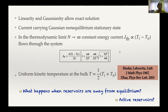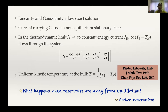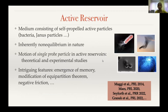What they showed is that in the thermodynamic limit — number of oscillators going to infinity — there is still a current flowing through the system, so Fourier's law doesn't actually hold. That current is proportional to the temperature difference, and moreover one can define a local kinetic temperature which remains uniform in the bulk at the average temperature of the two reservoirs. The question we ask today is: what happens when these reservoirs are away from equilibrium and do not satisfy the fluctuation-dissipation theorem?